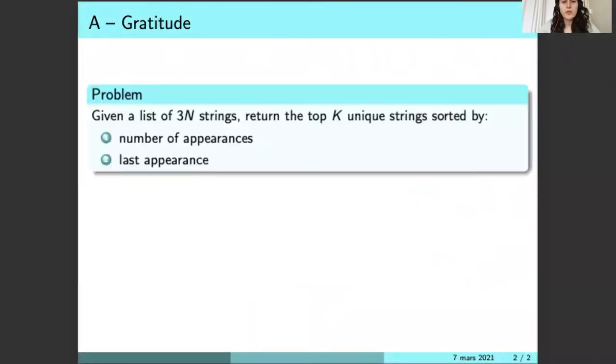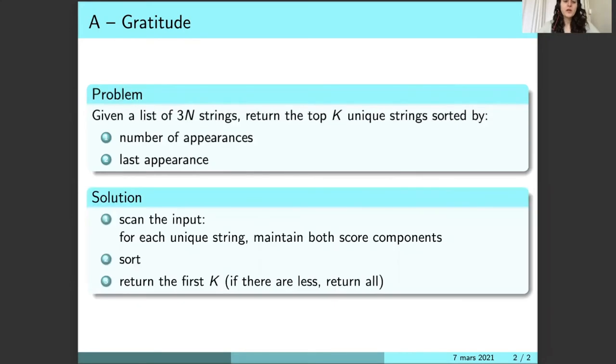In the problem Gratitude, we are given a list of strings and we want to return the top K unique strings sorted by number of appearances. The strings that appear more should appear earlier in our result. In case of ties, we break them using the last appearance—the latest last appearance should appear first.